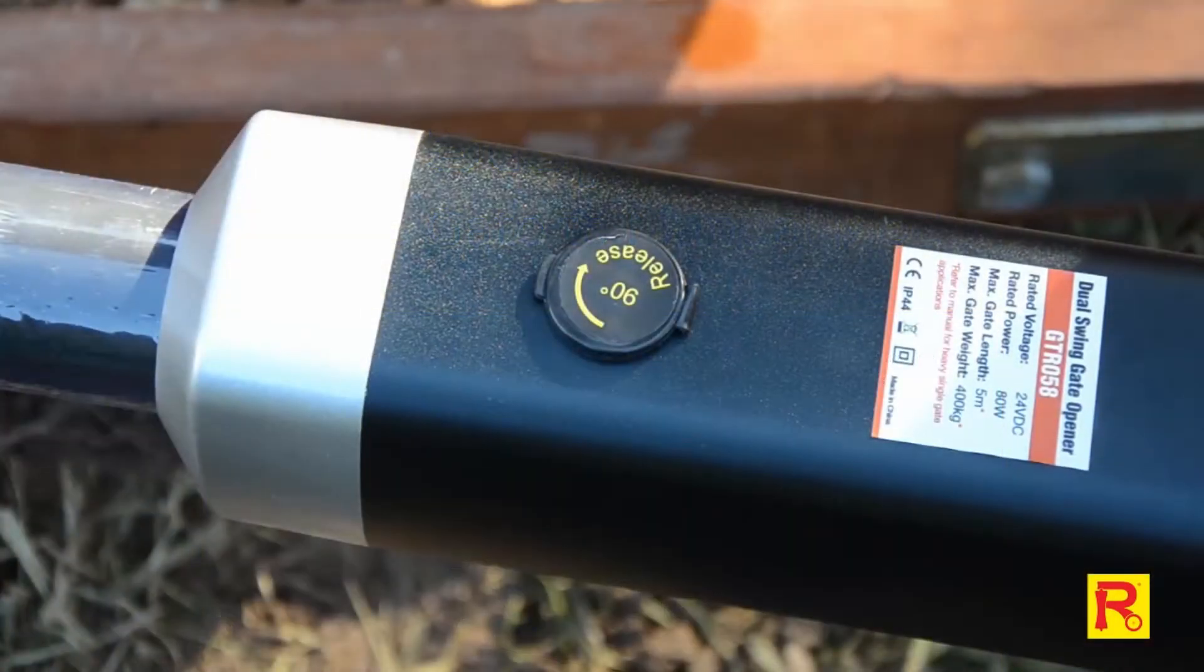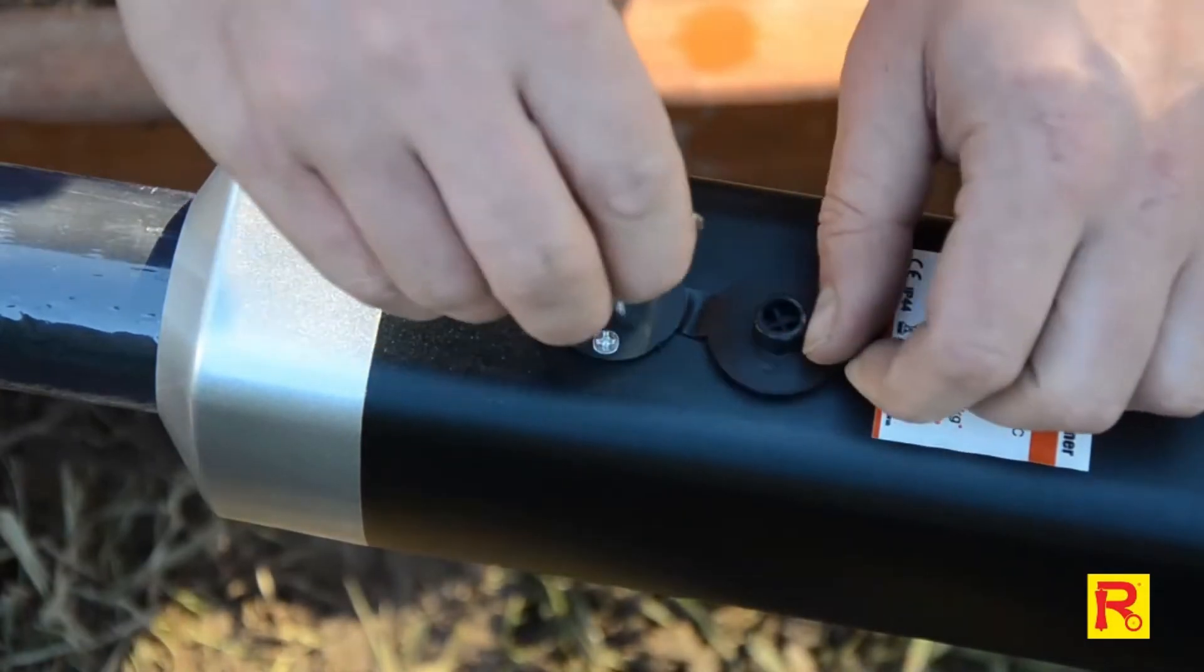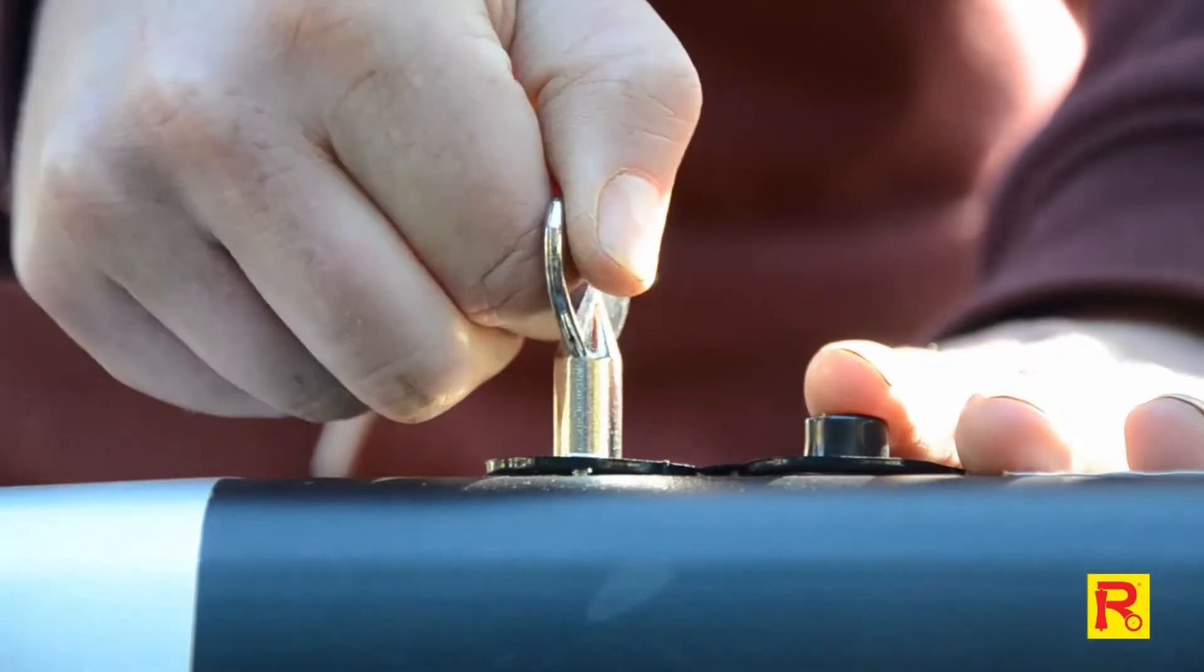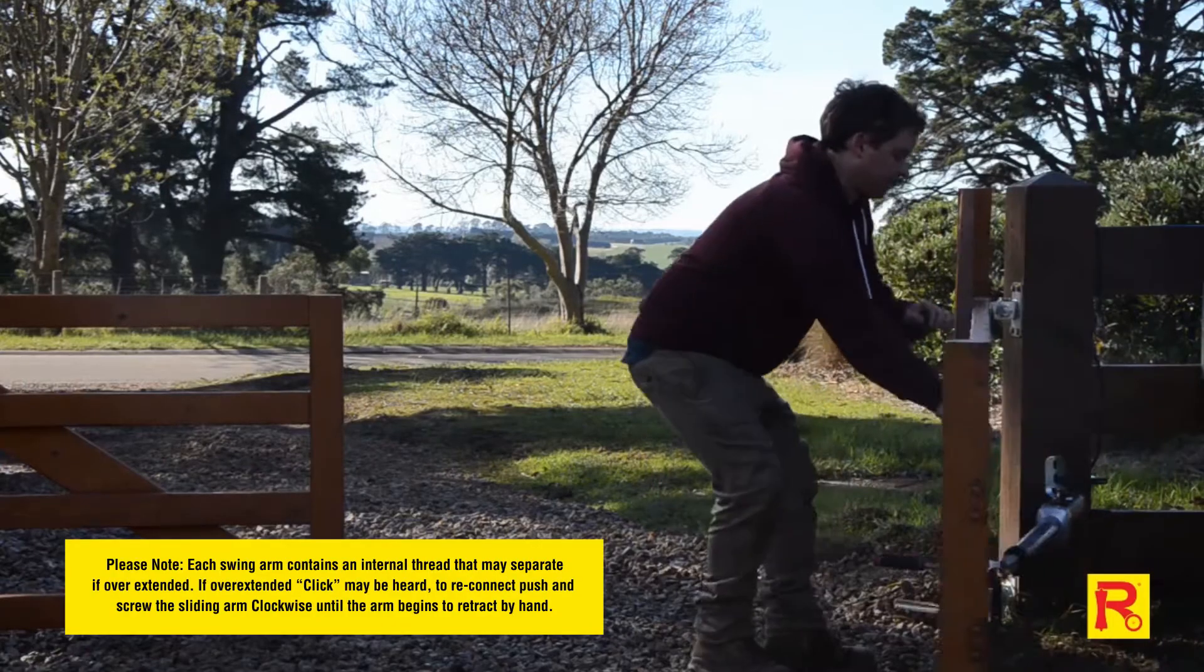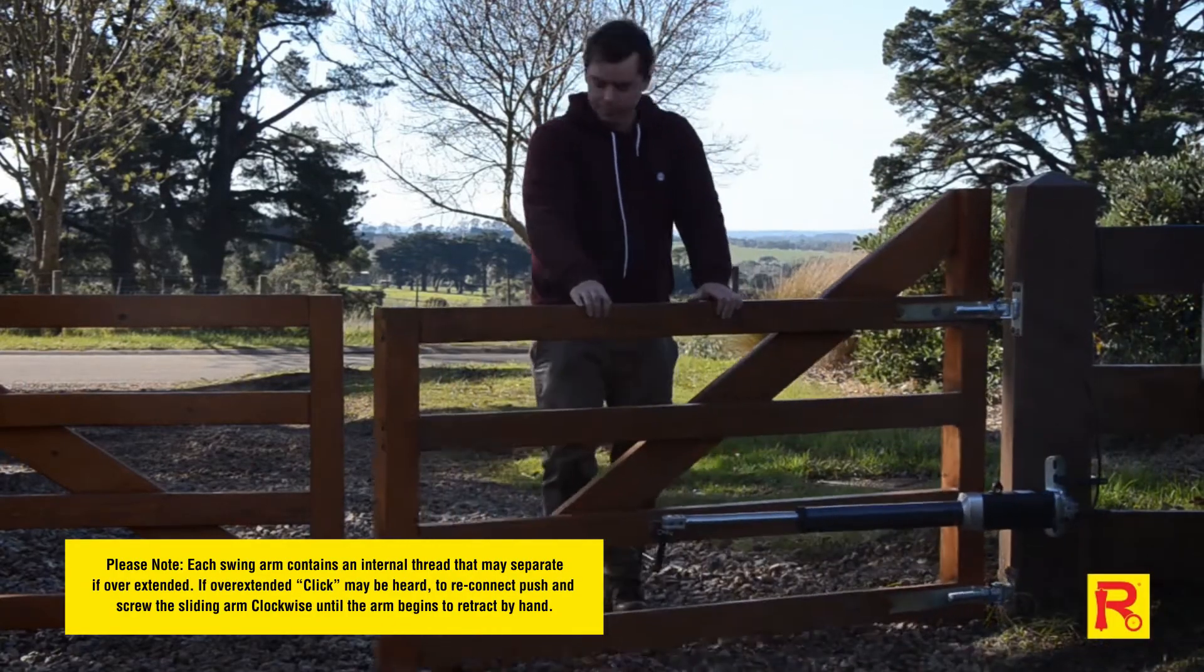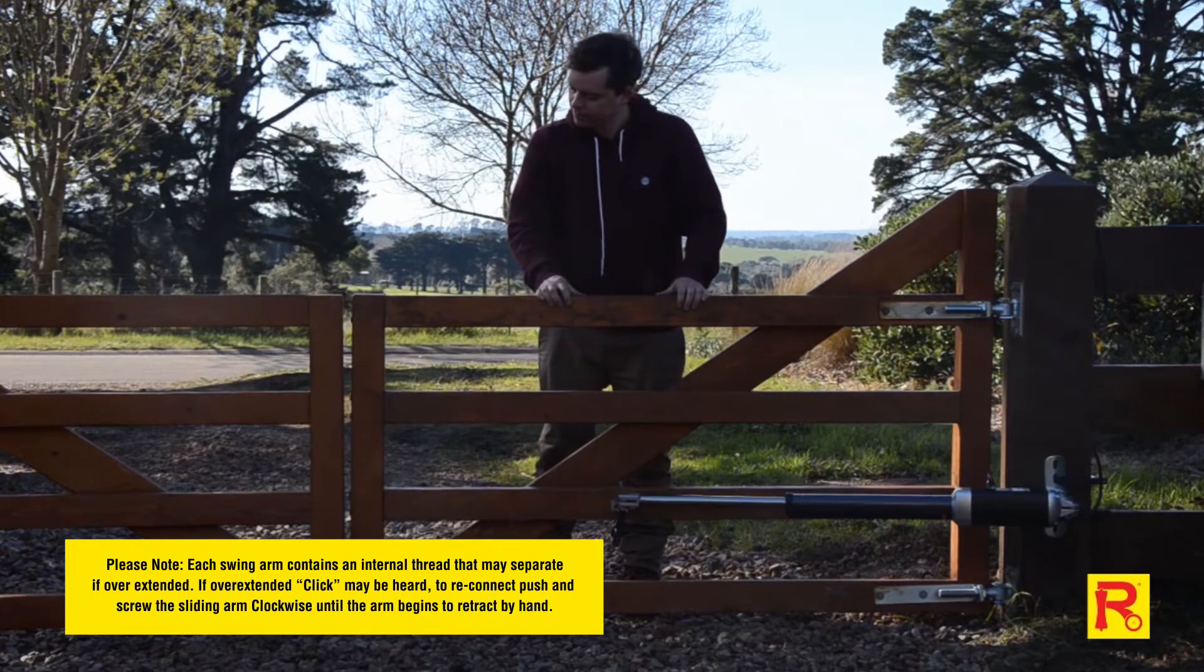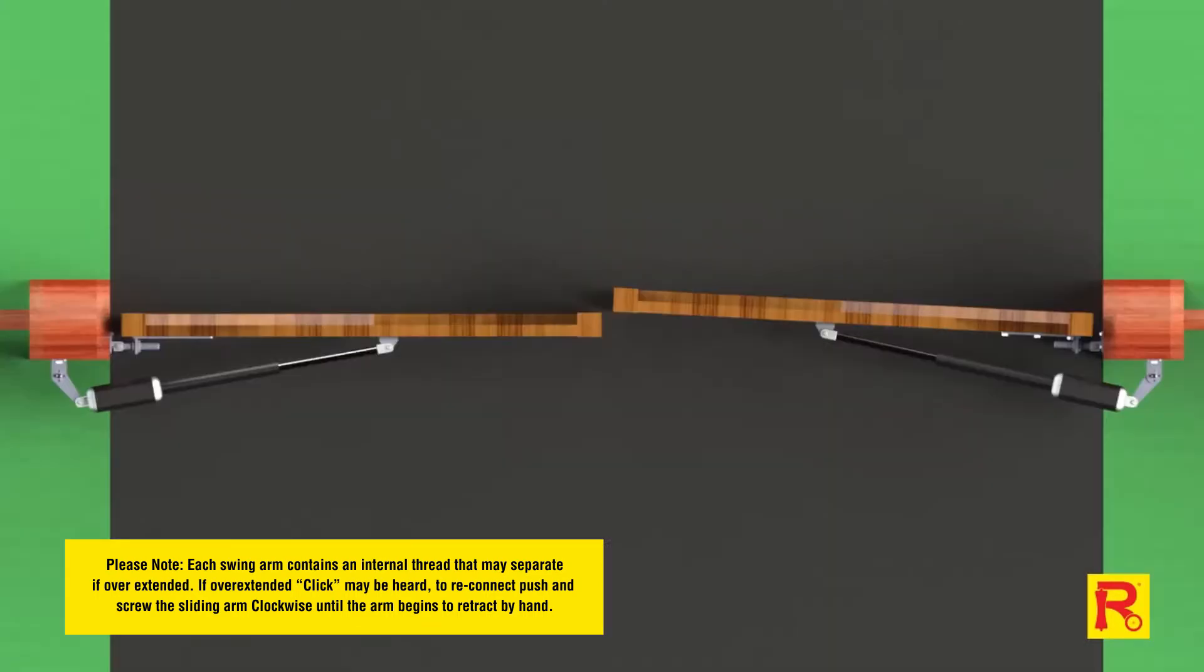Remove the release plug on top of both gate arms. Insert key and turn 90 degrees clockwise. This puts the gate opener in manual mode. Before proceeding to the next step, check that you can move your gate slightly past the fully closed position. If required, adjust the post bracket's positioning to ensure you can achieve the full range of motion.